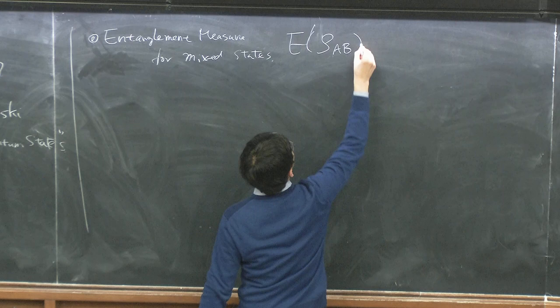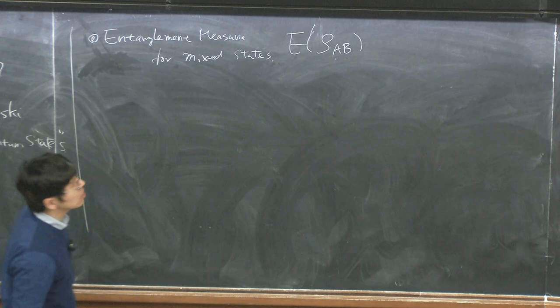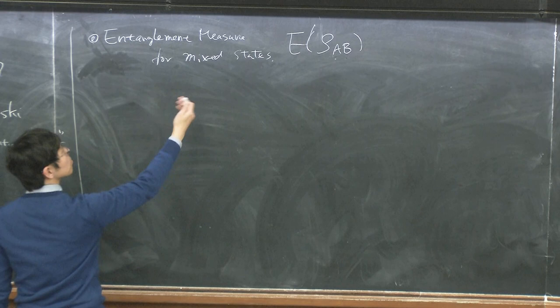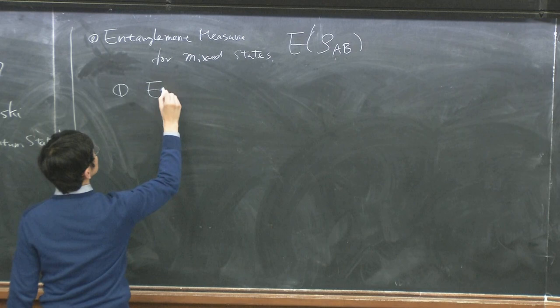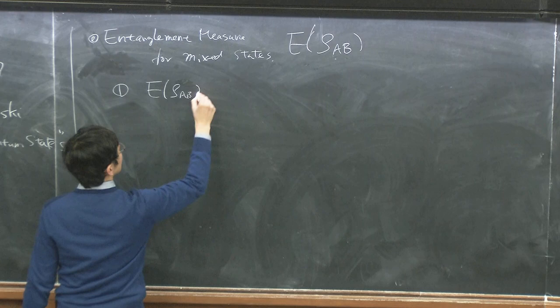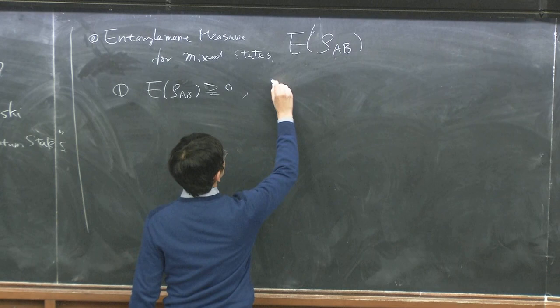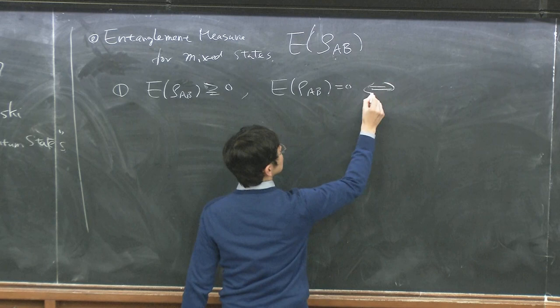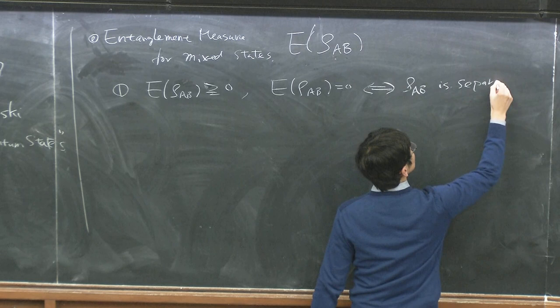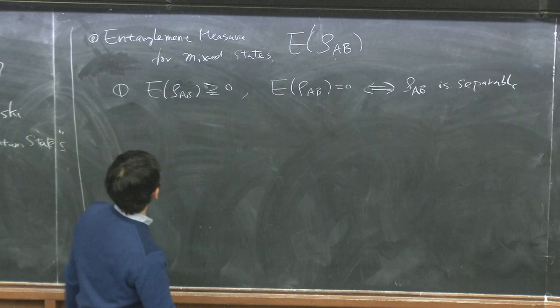We are talking about a bipartite system AB. We are interested in entanglement between A and B. In general, this is no longer a pure state — this is a mixed state. There are minimum conditions which this entanglement measure should satisfy. First: the measure E(ρ_AB) is always non-negative. The most important condition: if E(ρ_AB) equals zero, that is equivalent to the statement that ρ_AB is separable. This is the definition of entanglement for mixed states.